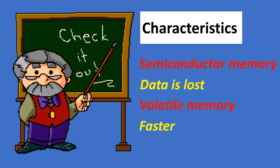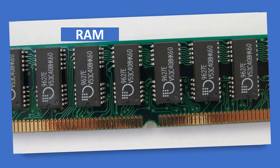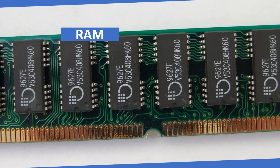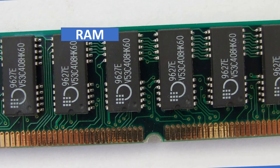RAM is faster than secondary memories. It is volatile or temporary memory — data gets erased when the power supply is off. It is faster memory, used in the normal operations of a computer after starting up and loading the operating system.